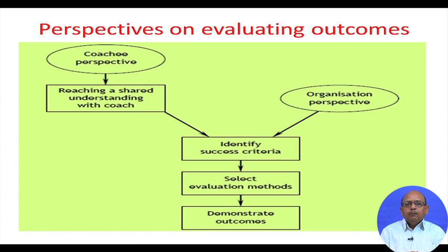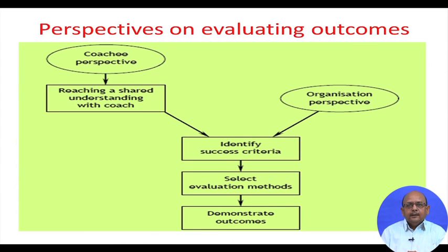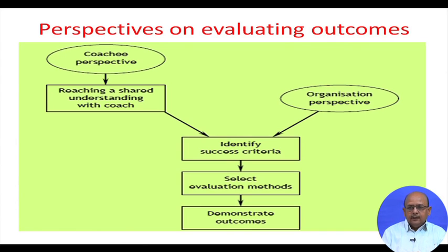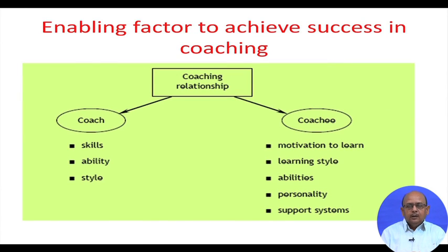When evaluating outcomes, there are two perspectives: the coachee perspective and the organizational perspective. From the coachee perspective, you reach a shared understanding with the coach. You also identify the organizational perspective. Both perspectives converge to identify success criteria. The organizational definition of success should match the coach and coachee perspective — essentially a shared understanding of what needs to be achieved. Then you identify an evaluation method, criteria for both coach and coachee, assess performance, and link it with goals and objectives.